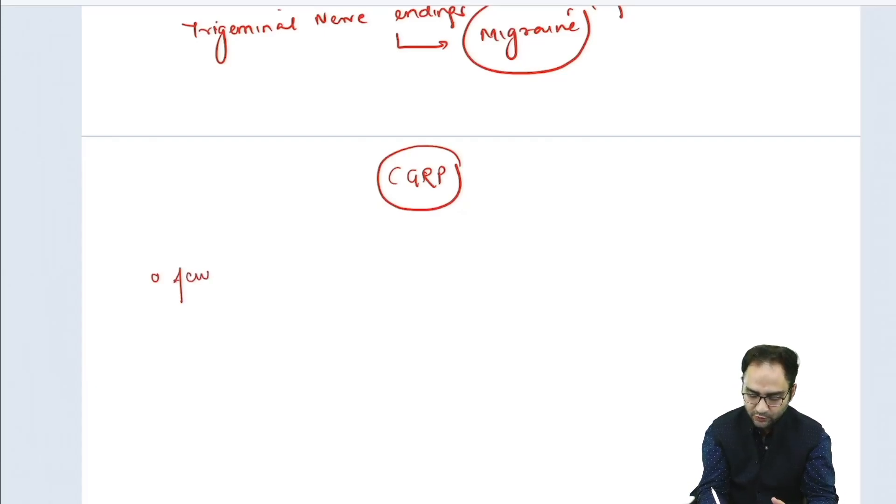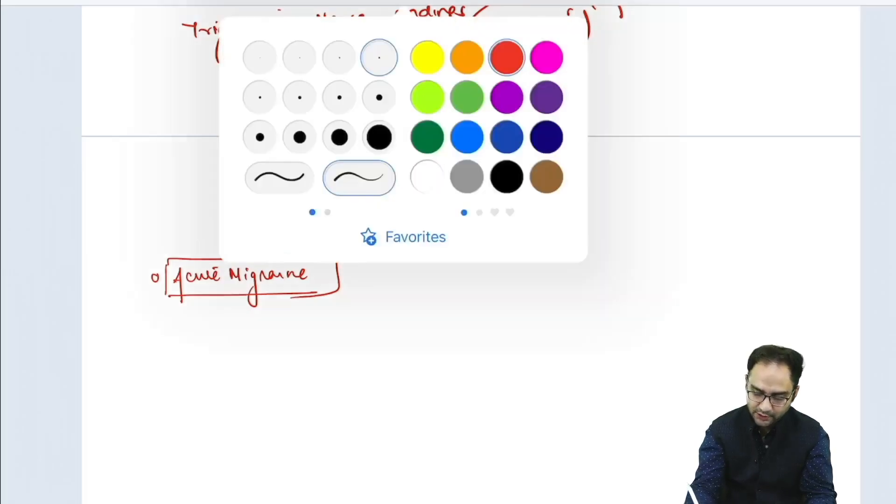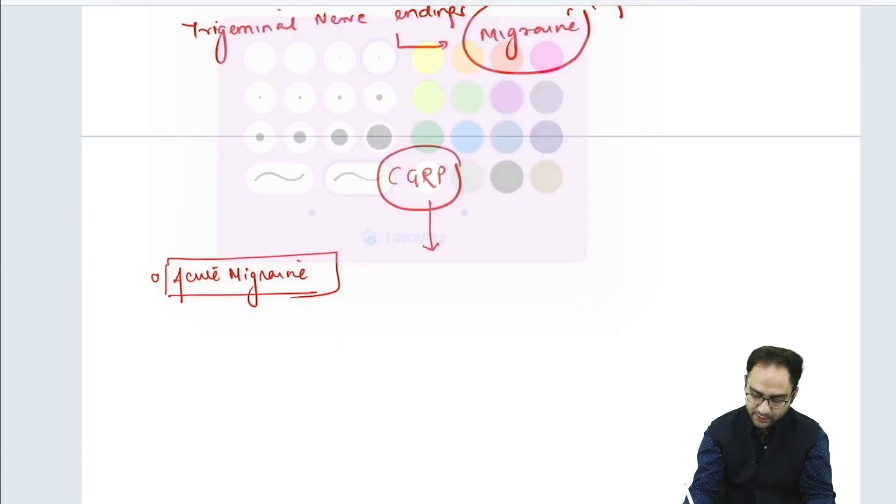First and foremost, you will treat patients who come with acute migraine. Those who come with acute migraine are being treated. Although the primary treatment for acute migraine is basically NSAIDs, there are certain CGRP analogues that are being used for treatment of acute attack of migraine.